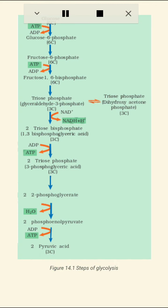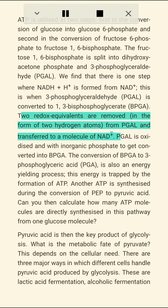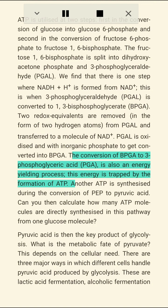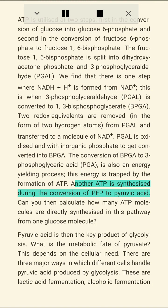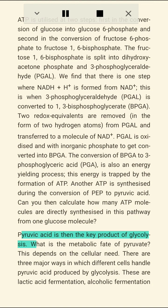ATP is utilized at two steps: first in the conversion of glucose into glucose-6-phosphate, and second in the conversion of fructose-6-phosphate to fructose-1,6-bisphosphate. The fructose-1,6-bisphosphate is split into dihydroxyacetone phosphate and 3-phosphoglyceraldehyde (PGAL). There is one step where NADH+H+ is formed from NAD+, when PGAL is converted to 1,3-bisphosphoglycerate (BPGA). PGAL is oxidized with inorganic phosphate to get converted into BPGA. The conversion of BPGA to 3-phosphoglyceric acid is also energy-yielding, and this energy is trapped by the formation of ATP. Another ATP is synthesized during the conversion of PEP to pyruvic acid.